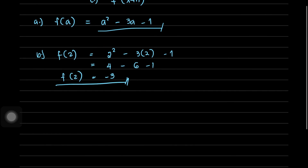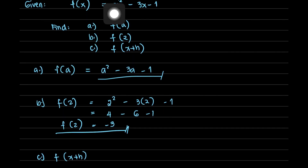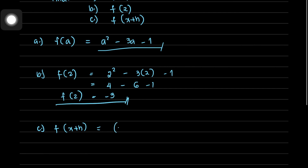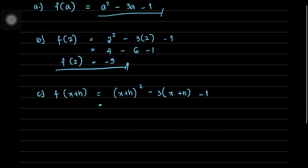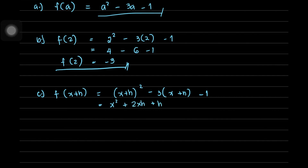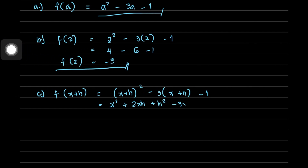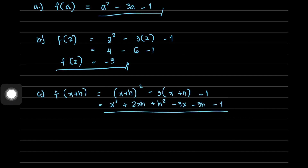For part (c), f(x + h): replacing all x with (x + h), we get (x + h)² - 3(x + h) - 1. Expanding, we have x² + 2xh + h² minus 3x - 3h - 1. We cannot simplify this any further, so this is our final answer.